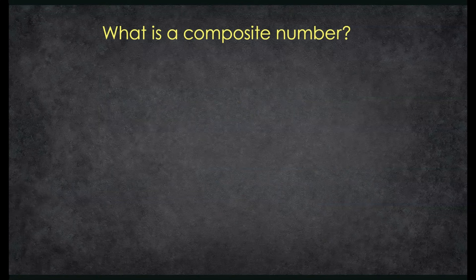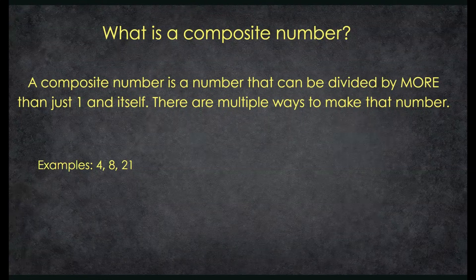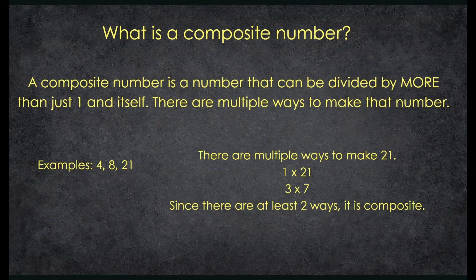What is a composite number? A composite number is a number that can be divided by more than just 1 and itself. There are actually multiple ways to make a certain number. Some examples of composite numbers are 4, 8, and 21. 4 is a composite number because I can make 4 as 1 times 4 and also 2 times 2. Since there's more than one way to make it, we consider it composite. 21 is composite because there's multiple ways: 1 times 21 and 3 times 7. Since there's at least two ways to make 21, we consider it a composite number.